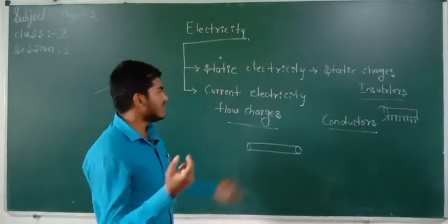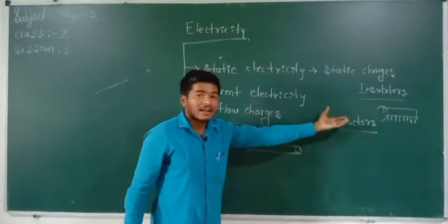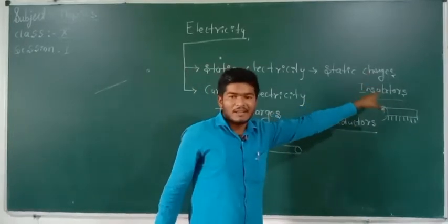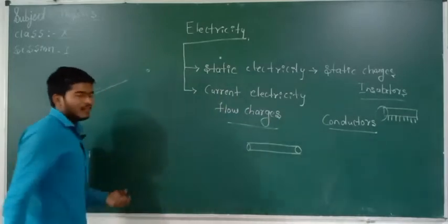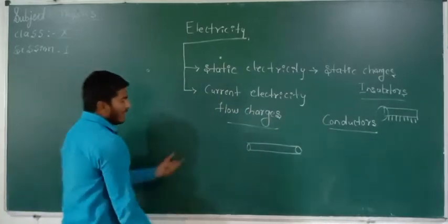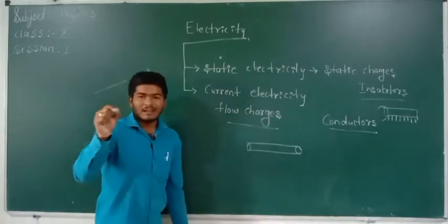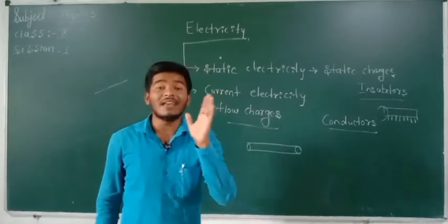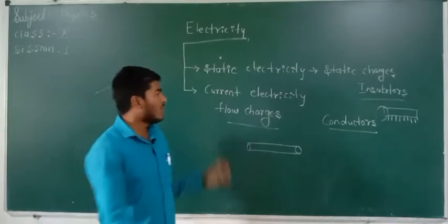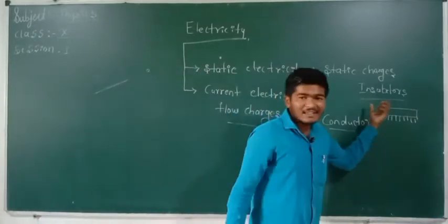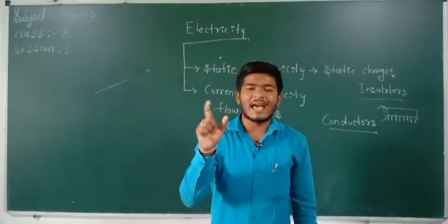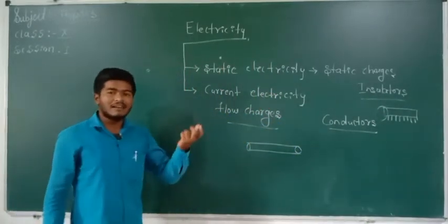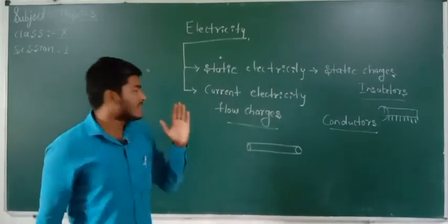What happens in insulators and what happens in conductors? Conductors are metals and insulators are non-metals. We have to consider atomic theory. In metals, every metal's atomic structure has free electrons. But in non-metals, there are no free electrons. These free electrons are helpful for the flow of charges.